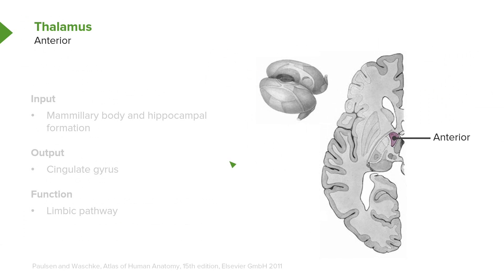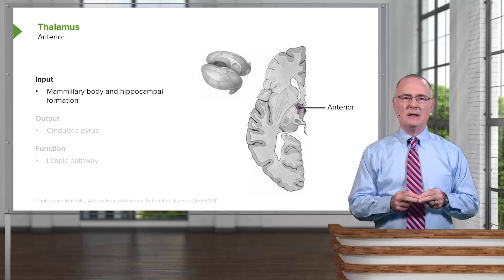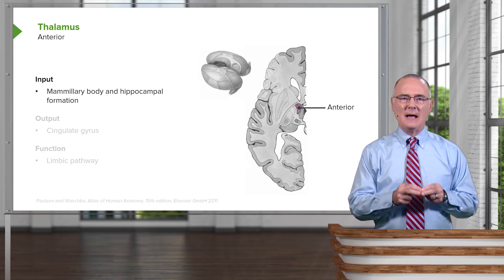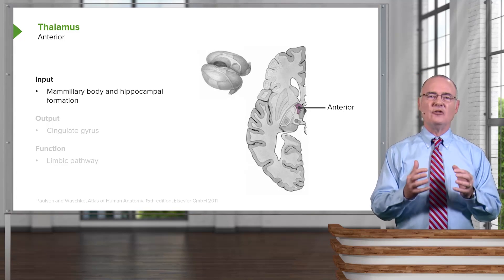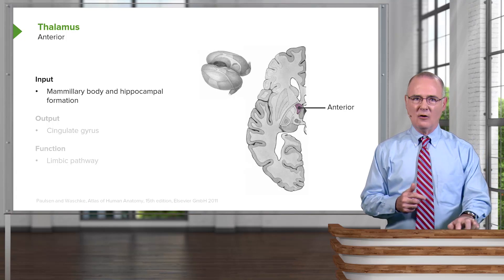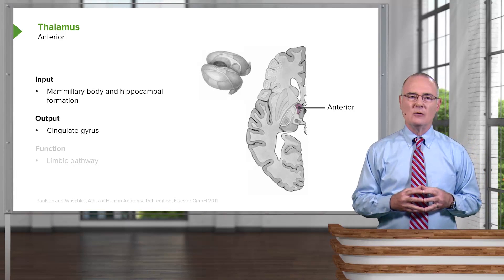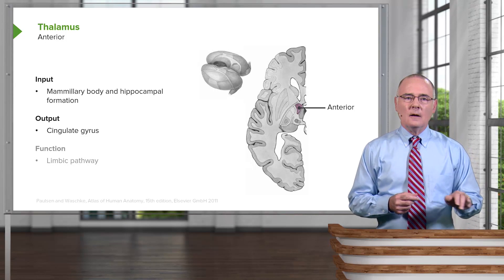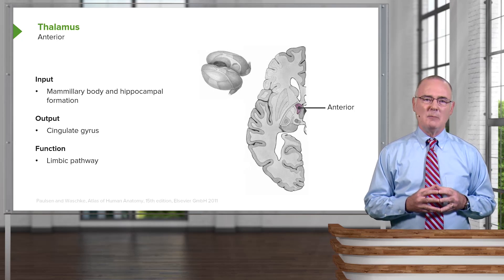The anterior thalamic nucleus is shown and highlighted here. When we think about thalamic nuclei — in this case the anterior one — we need to think about input and output. The input here is from the mammillary body and the hippocampal formation. The output will be to the cingulate gyrus, which is in the cerebral cortex. The function of the anterior thalamic nucleus is that it is involved in the limbic pathway.